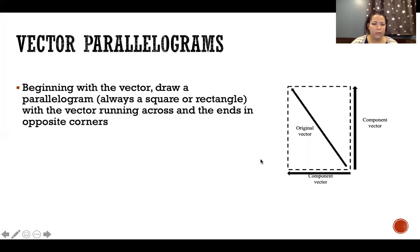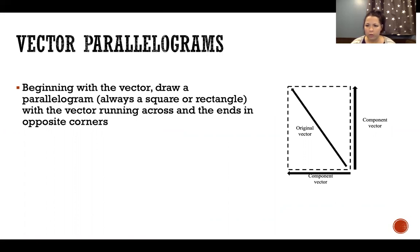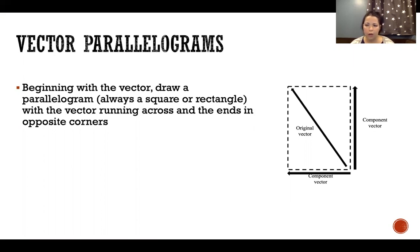Vector parallelograms: we begin with the original vector and draw a parallelogram around it where the original vector goes from one corner to the opposite corner. When drawing a vector parallelogram to find the component vectors, it's always a square or a rectangle. The original vector goes at a diagonal across the parallelogram, and the component vectors are the vectors that make up the horizontal and vertical sides of this parallelogram.